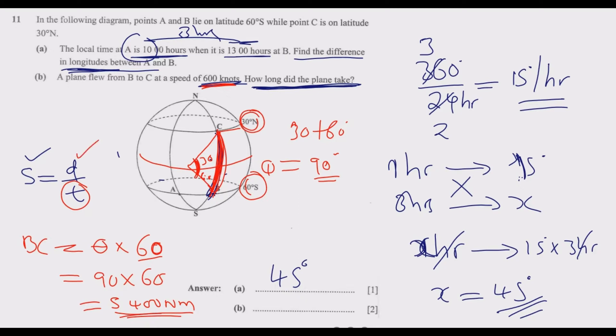Now we can find the time. We make time the subject of the formula, so T equals distance divided by speed. Distance is 5400 nautical miles, speed is 600 nautical miles per hour. Canceling zeros, we get 54 divided by 6, which equals 9 hours. So 9 hours is the time it will take for the plane to move from B to C.